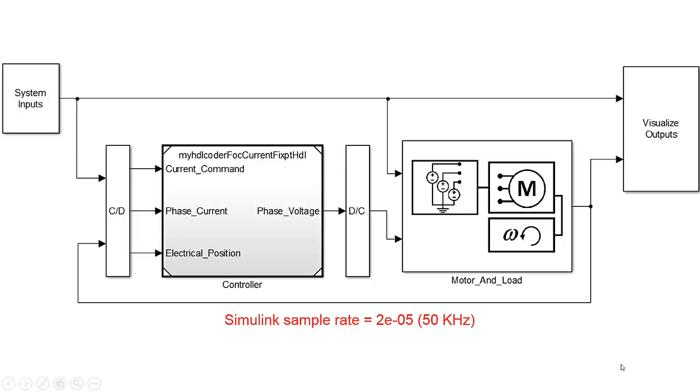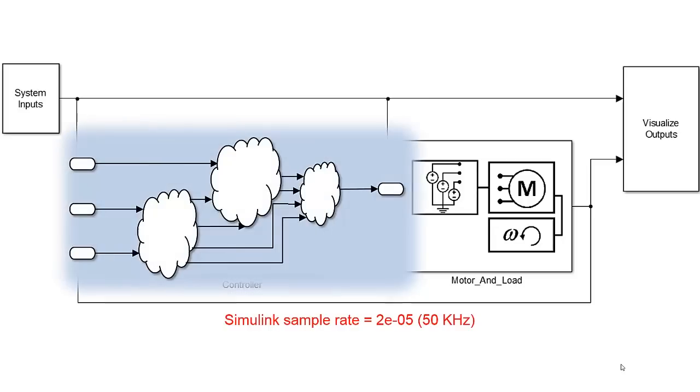But when we use HDL Coder to map this to an actual FPGA, by default, HDL Coder maps the sample rate to the clock rate. Every one of those pipeline stages that HDL Coder adds would add 20 microseconds to the latency.